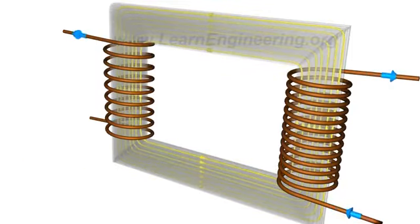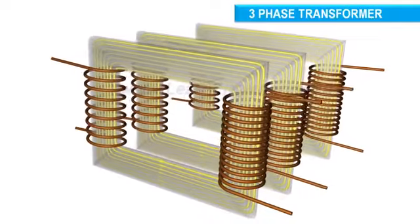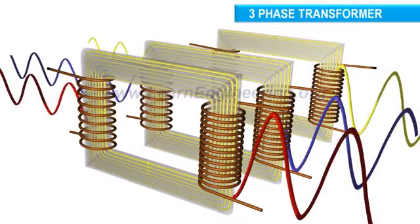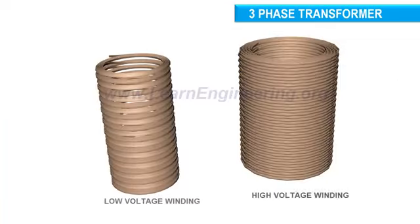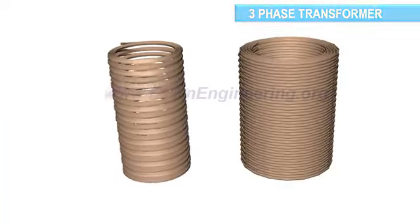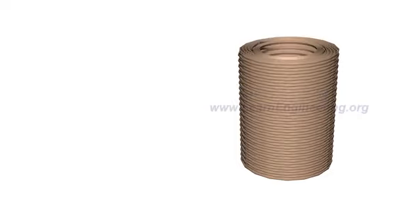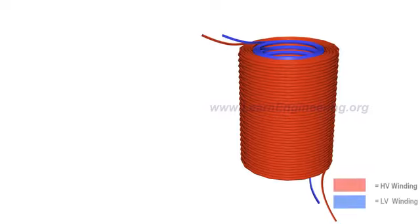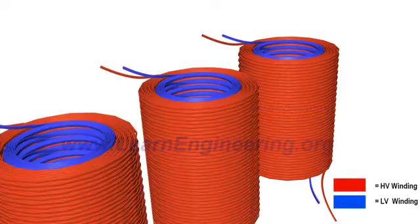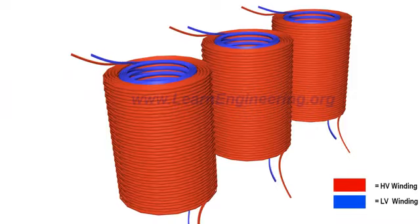Three-phase transformers use three such single-phase transformers, but with a slightly different coil configuration. Here, the primary and secondary coils sit concentrically. Two more such windings are employed in a three-phase transformer.